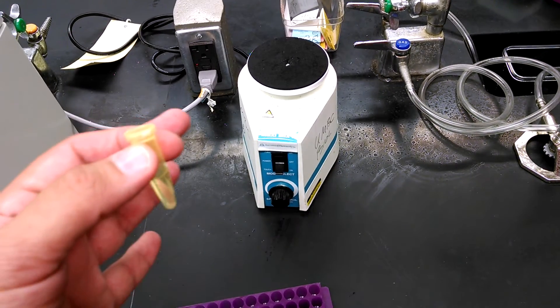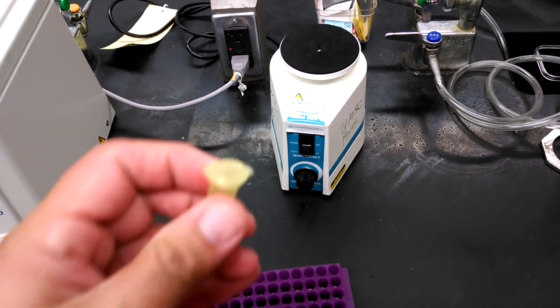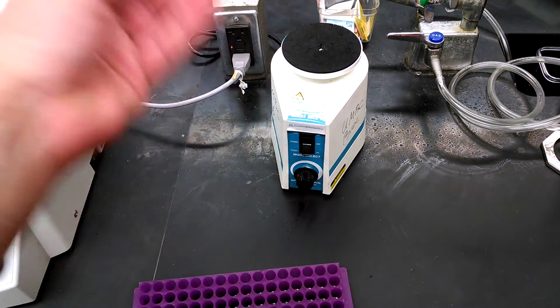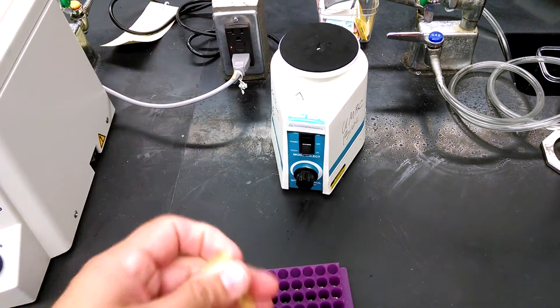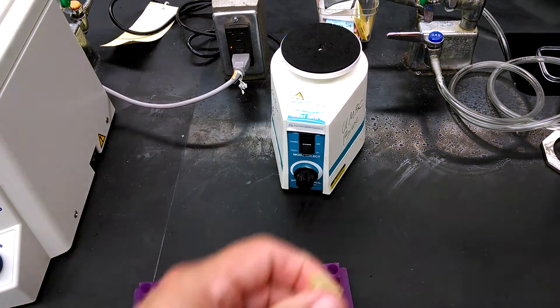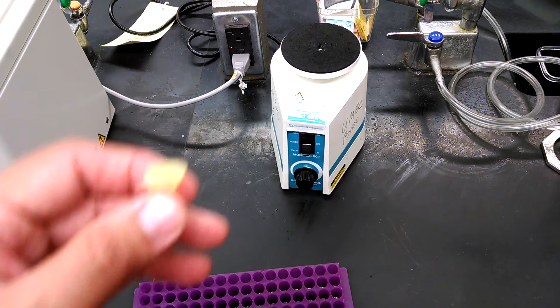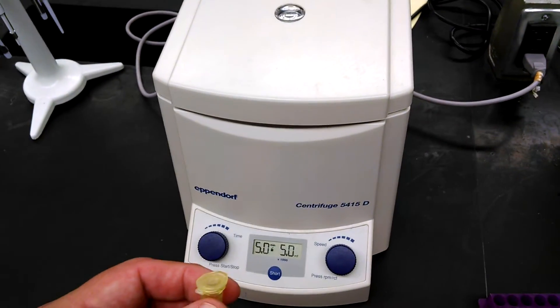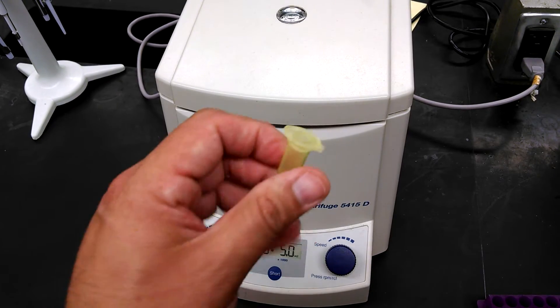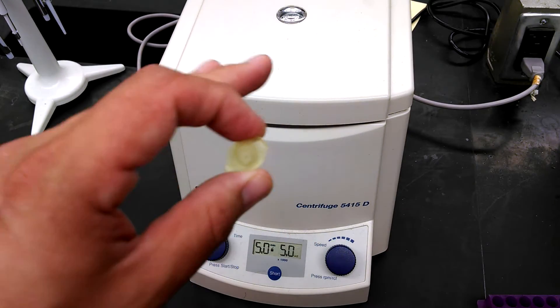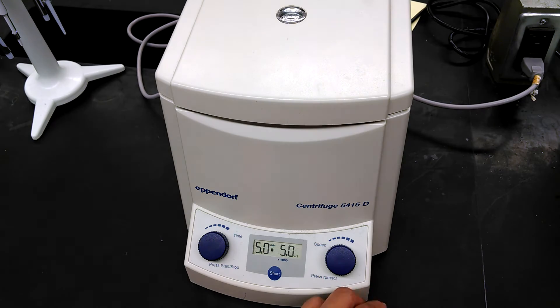And then it tells you to heat it up to 56 degrees for five minutes, and then come back and vortex it again, and then back to 56 degrees, and then vortex it again, and then to 100 degrees, and then to centrifuge it. And so when you are centrifuging, make sure you follow the actual procedure, not mine. I'm demoing the actual little steps.